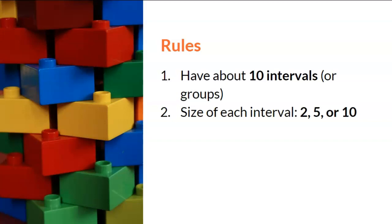If we selected an interval of 2, then the group would only have 2 values in it, such as 0 to 1, because 0 and 1 are a total of 2 numbers. If we selected an interval of 5, then the group would have 5 values in it, such as 0 to 4, because we have the values of 0, 1, 2, 3, and 4, which is a total of 5 numbers.